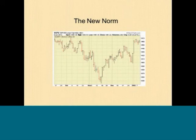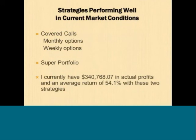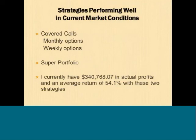I wanted to present two strategies that are doing well in this current market environment. Those two strategies are the covered call strategy using both monthly and weekly options, and the second strategy — the super portfolio — which uses stocks that do well in a slow-growth environment. I'm very actively trading these two strategies. A few days ago I had $340,000 in actual profits trading these two strategies and an average return of 54%.